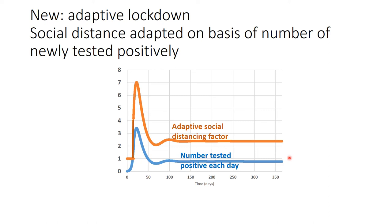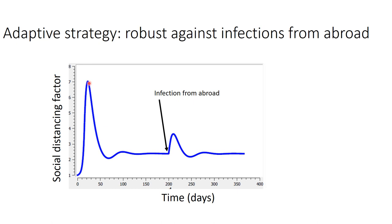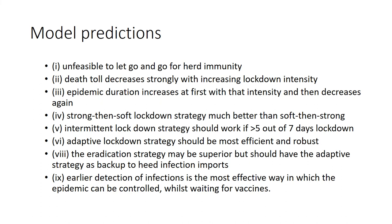This adaptive strategy also kills off the epidemic and is robust against infection from abroad. We calculated that if at day 200 an infection arrives from abroad and the epidemic erupts again, the adaptive strategy would prompt you to increase your social distancing factor again, killing the epidemic once more. The advantage of a continued adaptive strategy is that it is robust against imported infections.